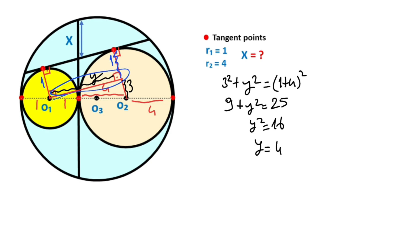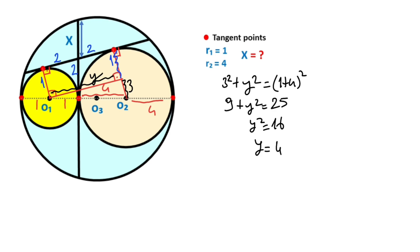That means this side equals four units. Because of the rectangle, the opposite side also equals four units. Notice that these three parts must be equal, so each of the three parts must equal two units.